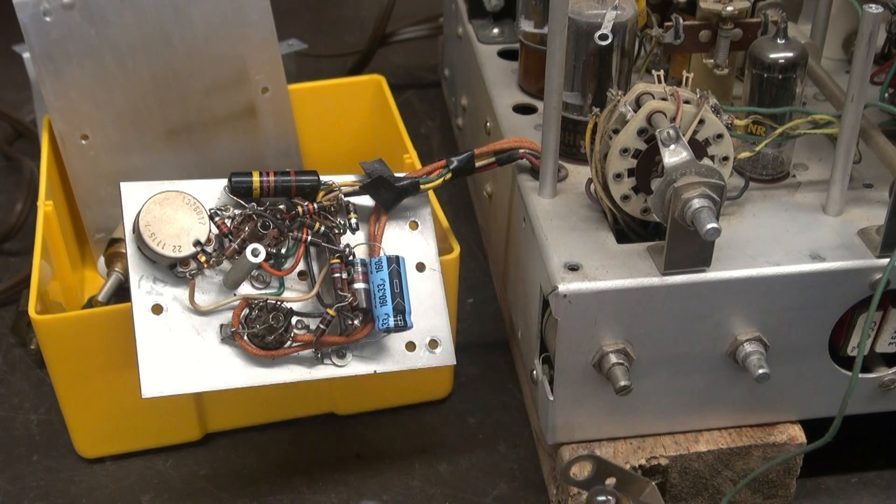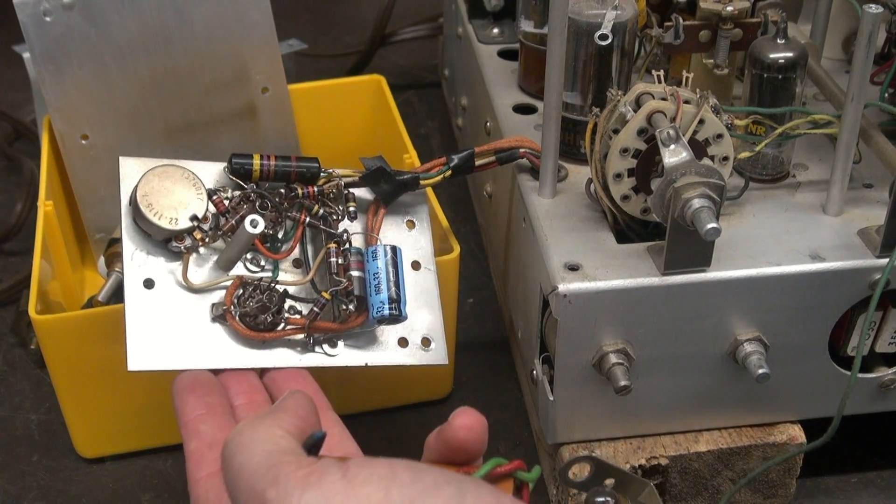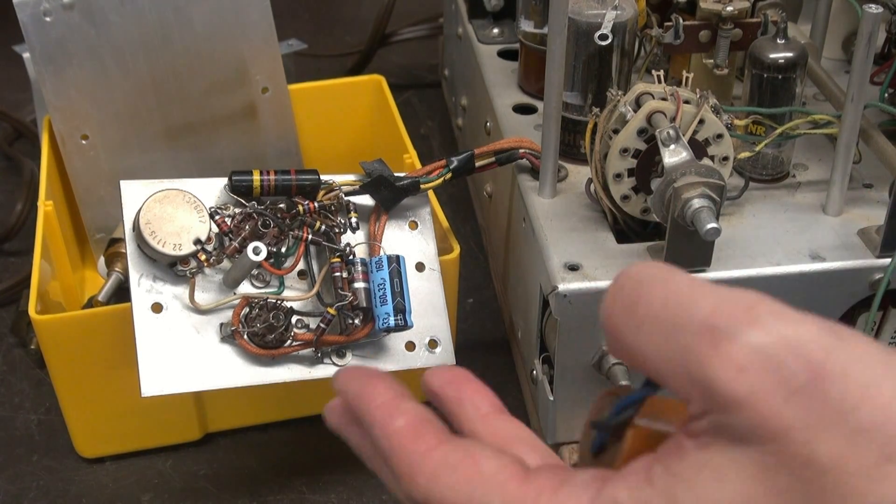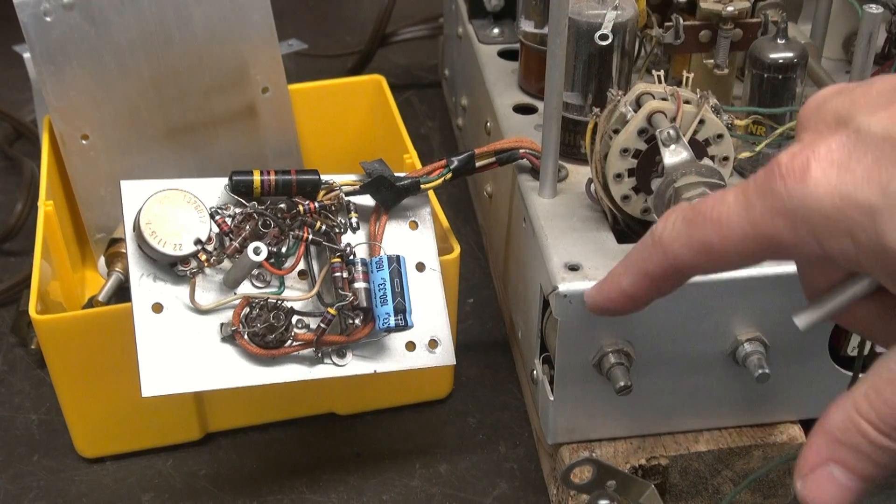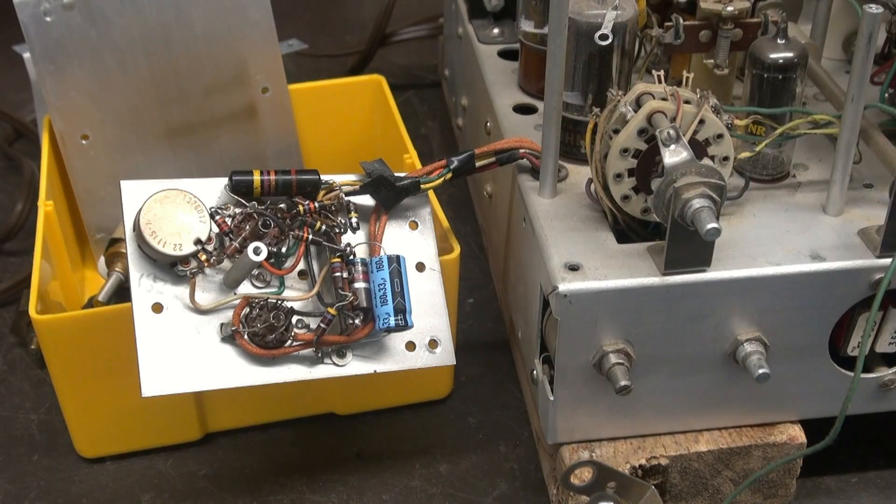So there's the old one and there's the new one installed. Now I'm going to mount the keyer platform back where it belongs. However, I got a little bit of a problem. When I took it off, I noticed that this mounting post was just floating, screws missing. So I have to repair that first and we'll swing the platform back in place.